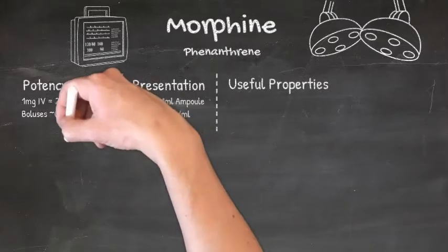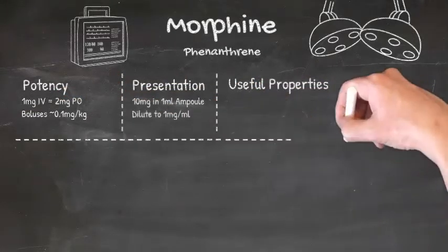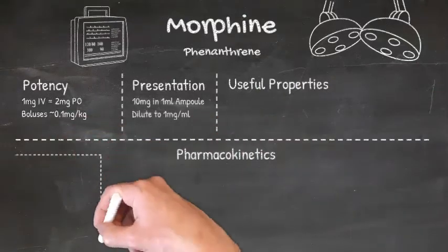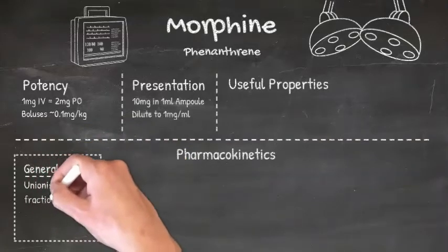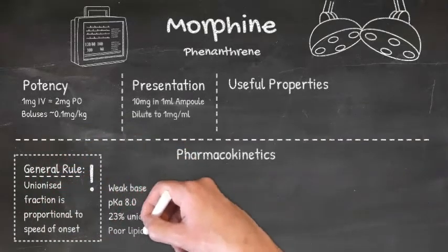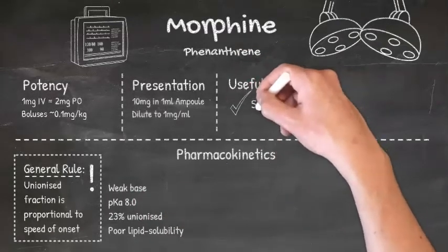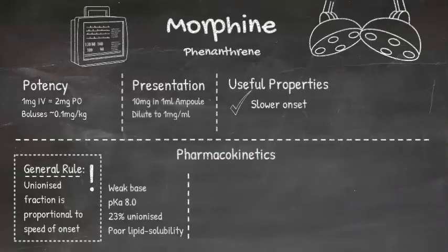Let's go through again and match its pharmacokinetics to its usefulness to us in anaesthetics. A reminder that the unionised fraction of opioid is generally related to its speed of onset. Morphine has a pKa of 8, meaning only around 23% of it is actually unionised at physiological pH, so its onset is slower than other opioids. It will not achieve a peak effect for about 5 to 15 minutes after injection.